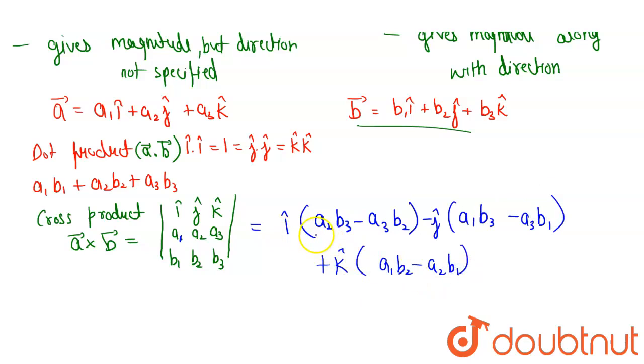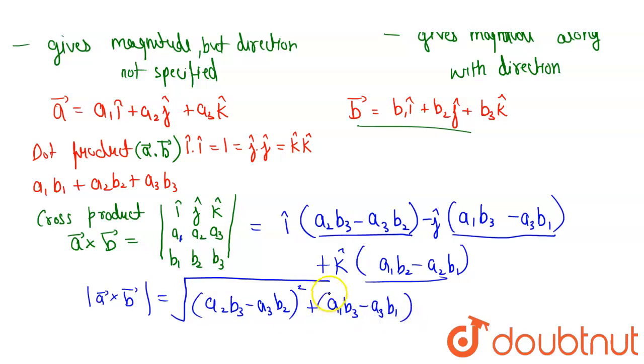So here you can see that the magnitude of this vector, this cross product, will be equal to the magnitude of these, that is sum of squares of coefficient of this one. So this will be under root of a2 b3 minus a3 b2 to the whole square, plus a1 b3 minus a3 b1 to the whole square, plus a1 b2 minus a2 b1 to the whole square.